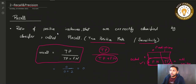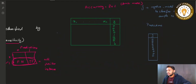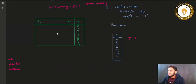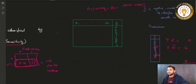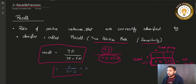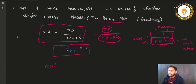The recall formula is: true positive divided by true positive plus false negative. Applying this to the dumb model — how many predictions are true positive? There are zero predictions as positive. True positive is zero, and there are two samples predicted as negative that are actually positive (false negatives). So recall = 0 / (0 + 2) = 0. Your recall is zero percent.